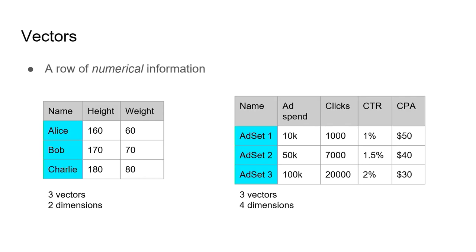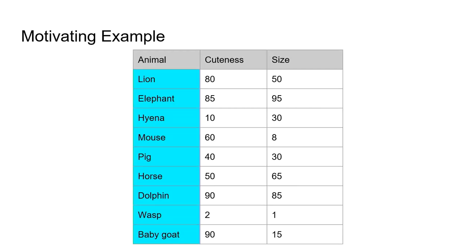Here is the motivating example we're going to look at. I've come up with a list of animals and my definition of what constitutes an animal: basically the cuteness of the animal and the size of the animal make an animal what it is. Take a look at this for 20 seconds — can somebody tell me what are the two animals which are most similar to each other based on my definition?